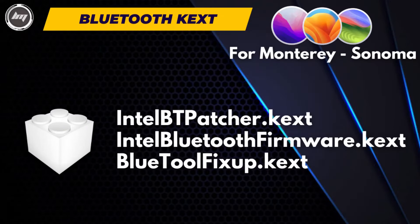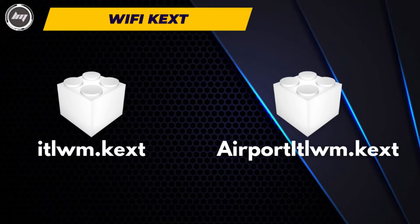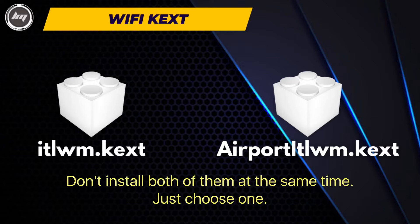Now let's fix the Bluetooth. If you're running Monterey or above, these are the files needed. If you're running Big Sur and older versions, here are the needed KEXTs. For the Wi-Fi, we have two available KEXTs: ITLWM KEXT and AirPort ITLWM KEXT. You don't need to install them both — just choose one KEXT.